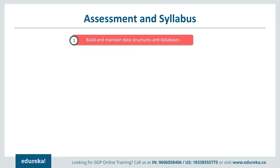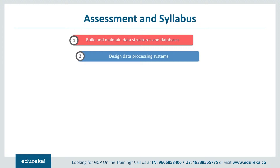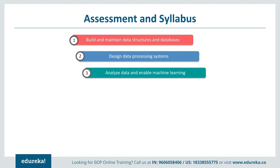Section 1 includes future advances in data technology, changes to business requirements, awareness of the current state and how to migrate design to a future state, data modeling trade-offs, and schema design. Section 2 is Designing Data Processing Systems, covering batch and streaming deployment, transformation, acquiring and importing data, testing and quality control, connecting to new data sources, provisioning resources, monitoring pipelines, and adjusting pipelines.